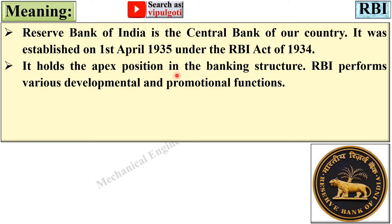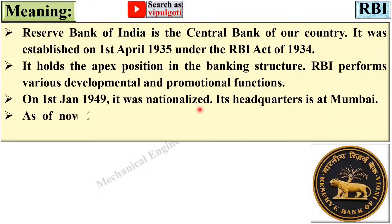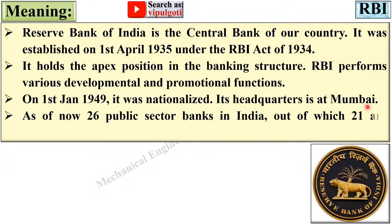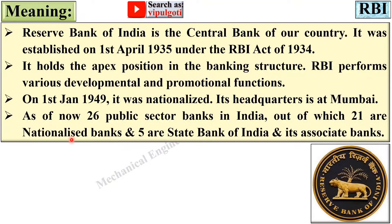RBI holds the apex position in the banking structure — that means the top position among all the banks in India. RBI performs various developmental and promotional functions. On 1st January 1949, it was nationalized. Its headquarters is at Mumbai. As of now, there are 26 public sector banks in India, out of which 21 are nationalized banks and 5 are State Bank of India and its associate banks.